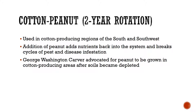So cotton would be one year and then peanut would be the other year. Someone who we know very famously around the four-state area is George Washington Carver, because he was very big into the peanut world. He advocated for peanut to be grown in a cotton rotation. Not only is he famous around here because of all his ag work with peanuts, but he's also pretty famous in the southern and southwestern United States because of that.